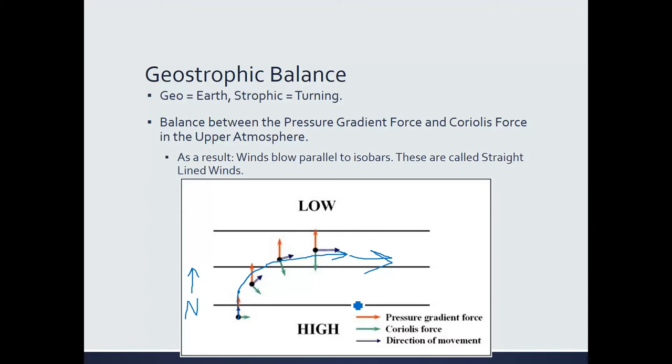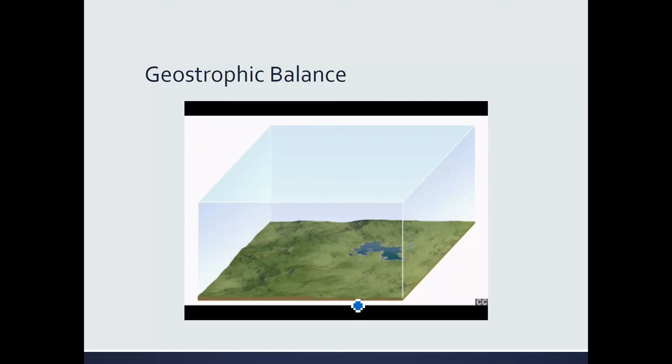In geostrophic balance, wind flows parallel to straight-lined isobars — these are called geostrophic or straight-lined winds. This is a common occurrence in the upper atmosphere. The net force is zero, so you might wonder why the wind is still moving. That's answered by Newton's first law: the particle was already set in motion before balance was reached, so per inertia, the wind remains in motion.